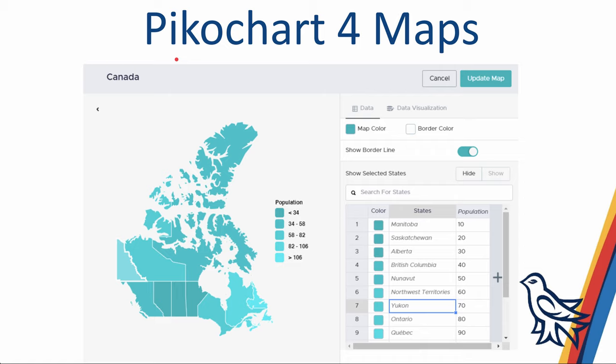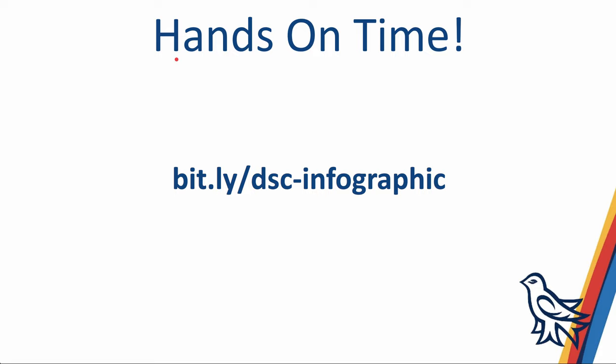One thing to note: if you're going to be using mapping data, Canva isn't really strong in that area. If mapping is important to you, I'd take a look at PicoChart, which is very similar to Canva. Now we're into hands-on time — I'll put the link in the chat, but if you go to bit.ly/dsc-infographic, you'll see the handout for the workshop and be able to get started on the in-class activities.